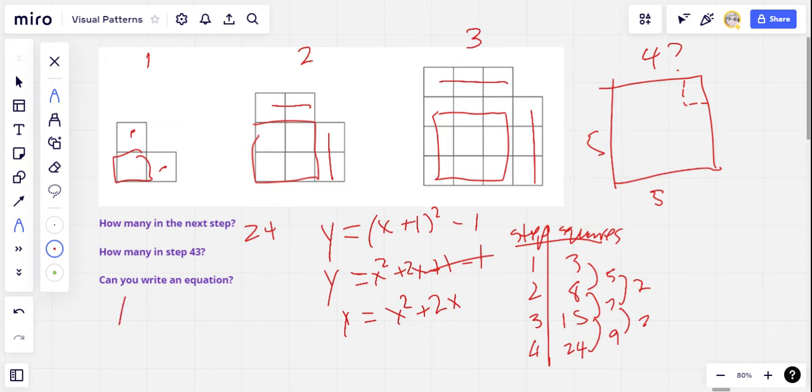So I think we can be pretty confident that's our equation. If we plug the numbers in here, let's try step two, that would be two squared, plus two times two would be four, that'd be eight. And yeah, that's what we get in step two. If we did it in step three, it'd be three squared plus two times three. So that'd be nine plus six, that's 15. Yeah, that's what we've got in step three. So this appears to work. So we're going to write that down as our equation.